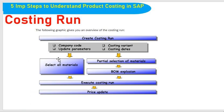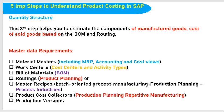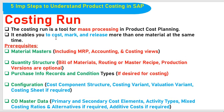The Costing Run graphic representation shows the Create Costing Run process. In order to create a Costing Run, we need Company Code, Update Parameters, Costing Variant, and Costing Dates. We can select all materials. The steps include Costing Variant selection, material selection, BOM Explosion, Execute Costing Run, and finally price update. This Costing Run enables materials to have their prices updated and released — it enables you to cost, mark, and release more than one material at the same time.